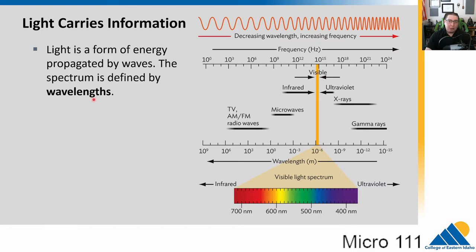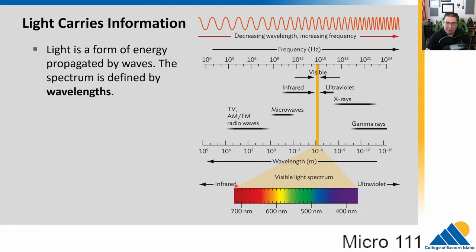At its core, light is a wave. We have this property called wavelength, which is the distance between the peaks. Different wavelengths have different energy, and all of these can carry information. For us in most cases, we think about that in terms of what we see every day — visible light. Only a small portion of our light spectrum is actually visible to our eyes.